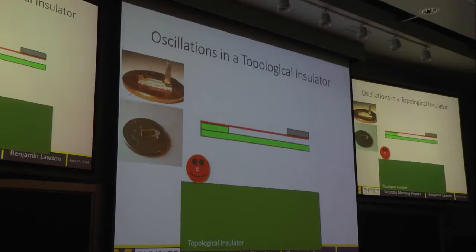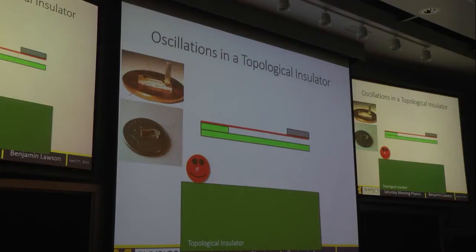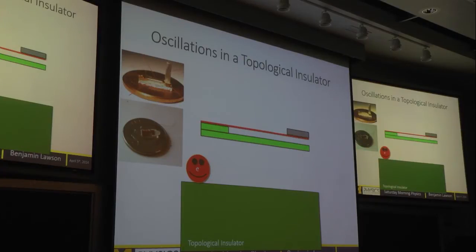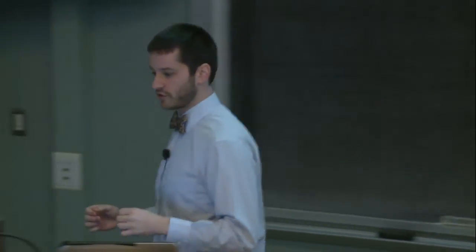Let's talk about our actual measurement. What we do is take our sample and glue it on top of a little diving board — when I say little, I mean very little. I have pictures of our actual diving boards: the top one is sitting on a penny and the bottom one on the head of a dime — very, very tiny. We put this diving board in a really big magnetic field and see how the sample pushes on the diving board.